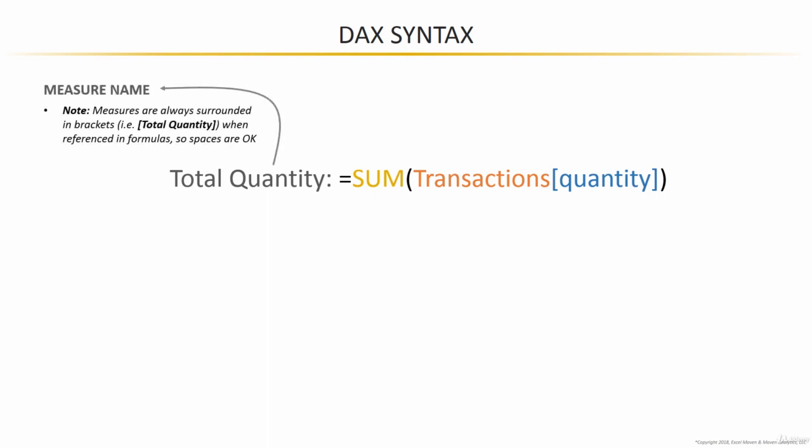In gray we have the measure name, and as mentioned, measures will always be surrounded by brackets when referenced in formulas, so having spaces in the name is okay.